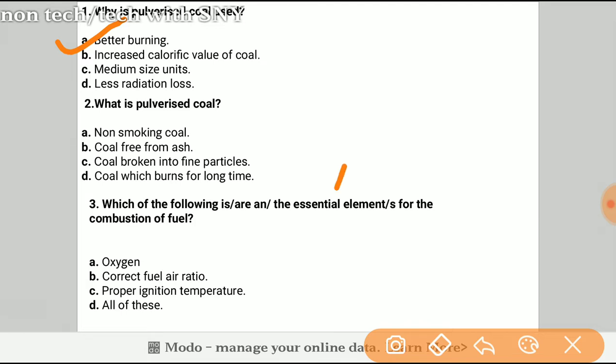Question number three: Which of the following are the essential elements for the combustion of fuels? The answer will be D, all of the above, because we have oxygen, we have correct fuel air ratio, we have proper ignition temperature. All these are essential for the combustion of fuels.